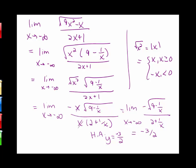Key points to notice: we used the technique of factoring out x squared — an even power — so that we can simplify the square root of each piece. The critical fact is that √(x²) equals |x|, so we must decide whether to use x or −x depending on the direction of the limit. We also factored x out of the denominator, which is equivalent to dividing both numerator and denominator by x.